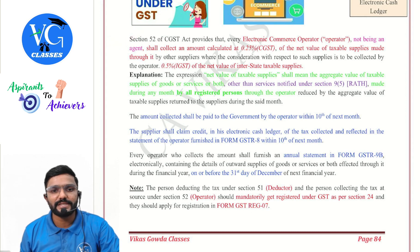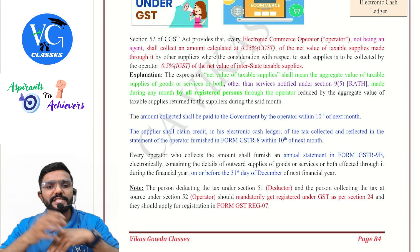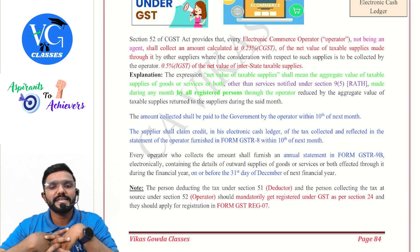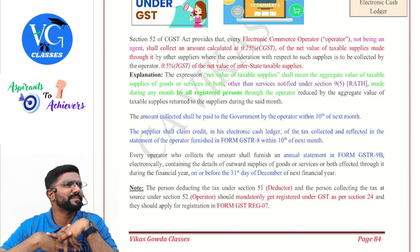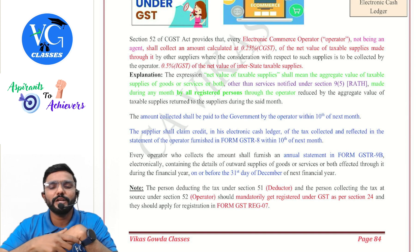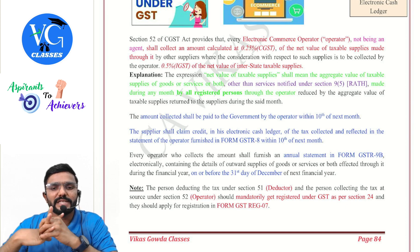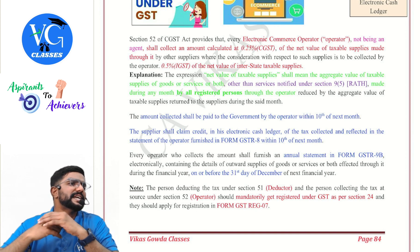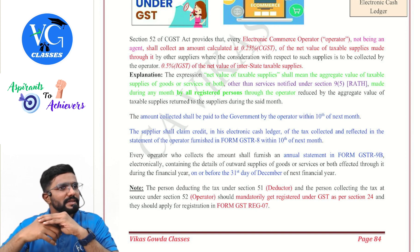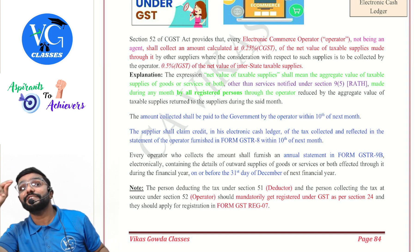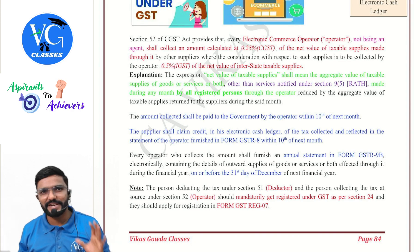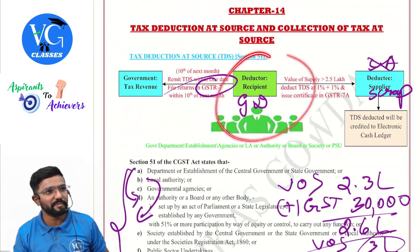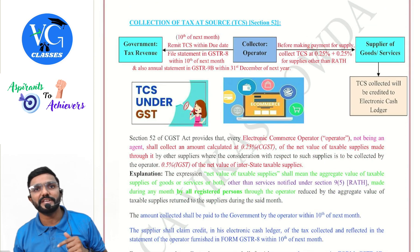Section 52 of CGST Act provides that every electronic commerce operator, not being an agent, shall collect an amount calculated at 0.25% CGST and 0.25% SGST — or 0.5% IGST if it is an interstate supply — of the net value of taxable supplies made through it by other suppliers, where the consideration is to be collected by the operator. Note: there is no threshold limit for TCS, unlike TDS which had a ₹2,50,000 limit. Please be careful — TDS is deducted only by government people; TCS is collected only by e-commerce operators.